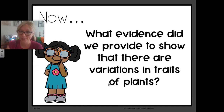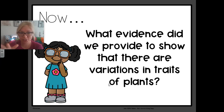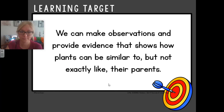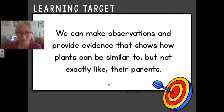Now is the moment where you think about what we considered at the beginning of this lesson. What evidence did we provide to show that there are variations or differences in traits of plants? Feel free to discuss with your families. And did we hit our learning target — that we can make observations and provide evidence that shows how plants can be similar to but not exactly like their parents? I hope you did, and I can't wait to see what leaves you chose for your investigation. Thank you for your hard work and I'll see you tomorrow for Lesson 7.